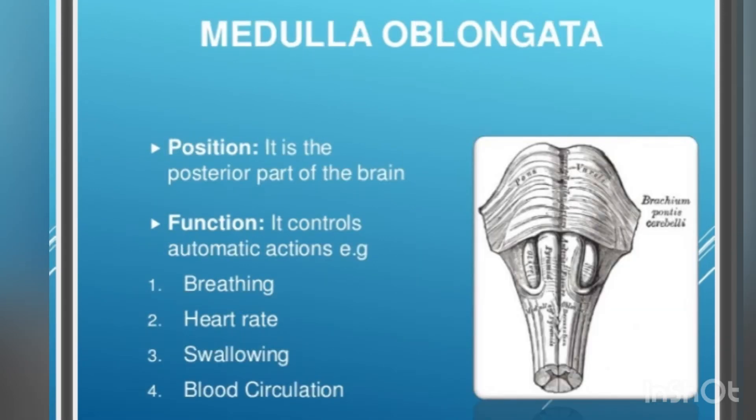Medulla oblongata position: it is the posterior part of the brain. Function: it controls automatic actions such as breathing and heart rate.